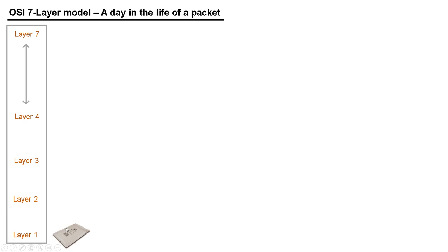Starting with the envelope analogy: if I want to send data or a packet to somebody, let's use the envelope analogy first. If I want to send this to somebody who lives on the same street or the same town, I might just deliver it directly — walk down the street and post it, or drive to their house. Because that person lives in the same postcode or zip code or vicinity, I just deliver it directly. The same thing happens in computer networking: if I want to send data to a machine on the same subnet, I can just send it directly.